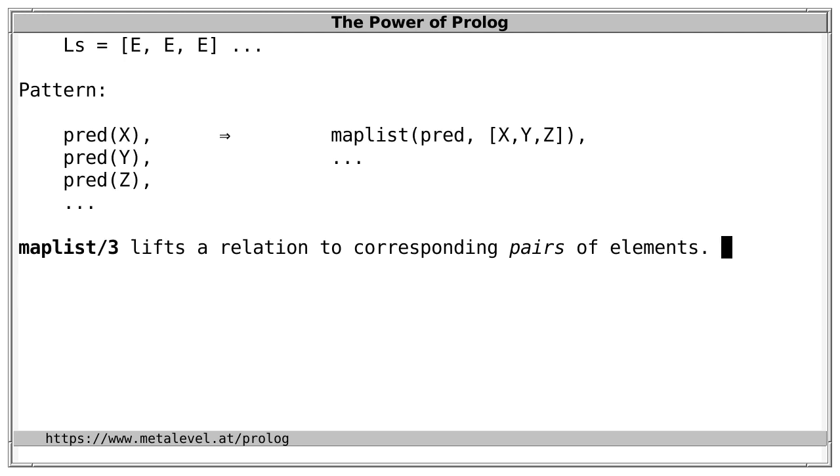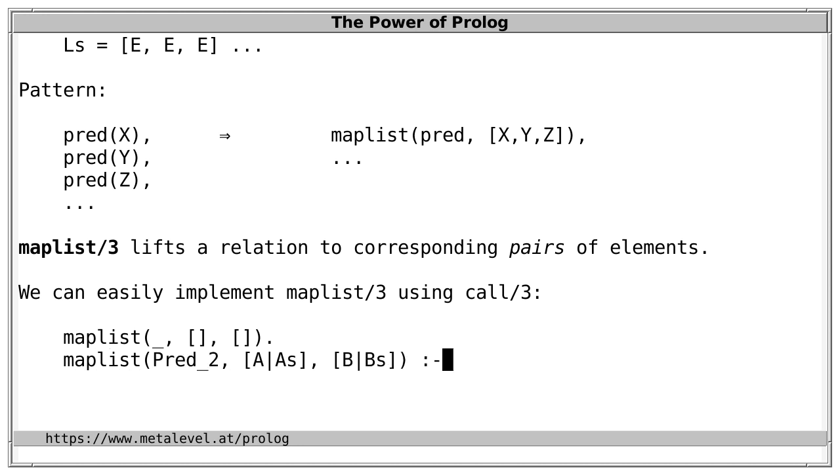And maplist/3 lifts a relation to corresponding pairs of elements using two lists. So if maplist/3 weren't available, we could implement it using call with three arguments. For example, if both lists are empty, maplist holds, no matter what the predicate is. And second,